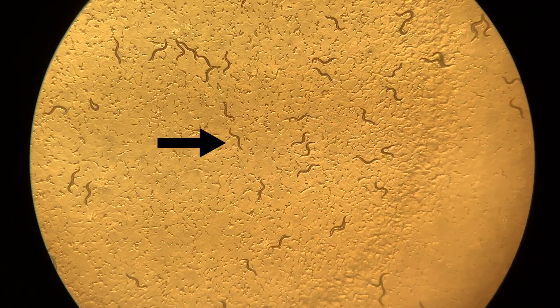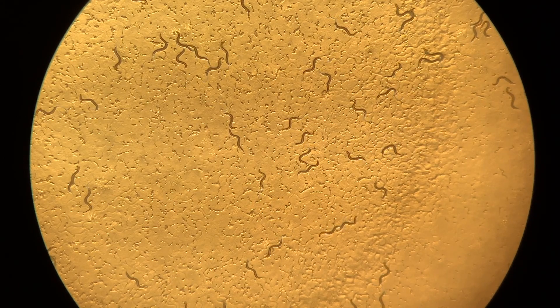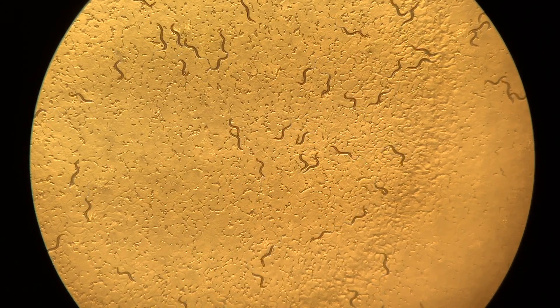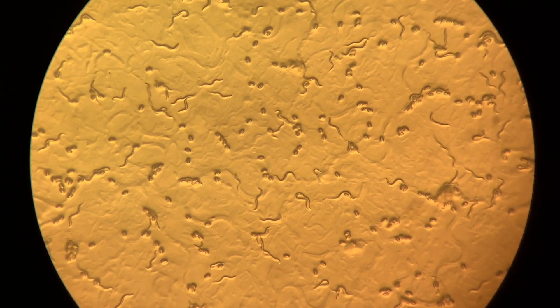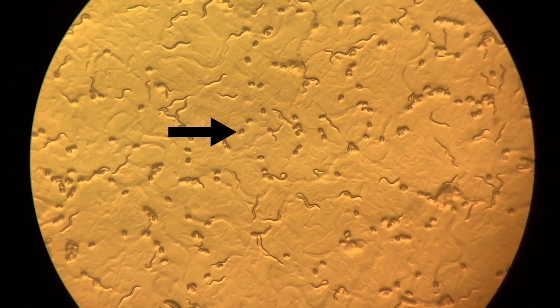Here you can see an adult worm, which is 1mm long. Think about the thickness of your credit card. And if you zoom in a little bit, you can see some larva and eggs more clearly.